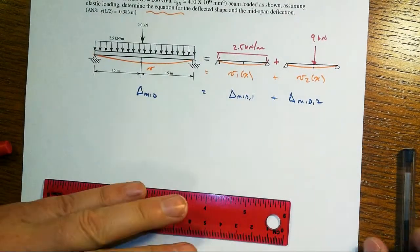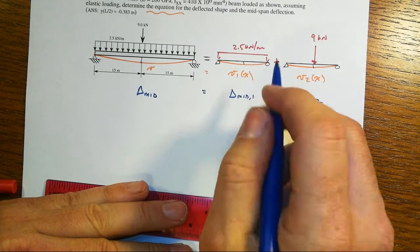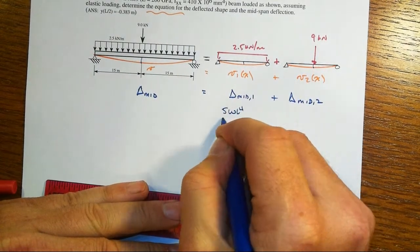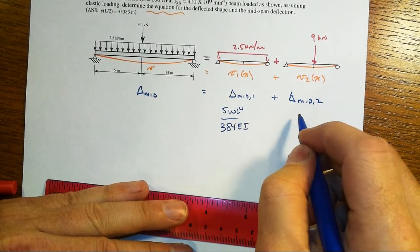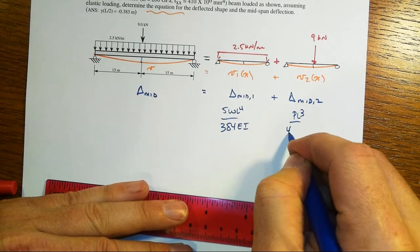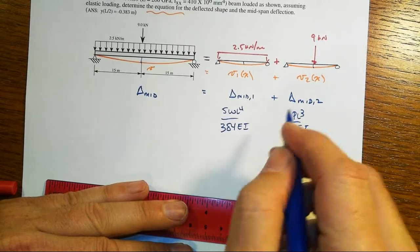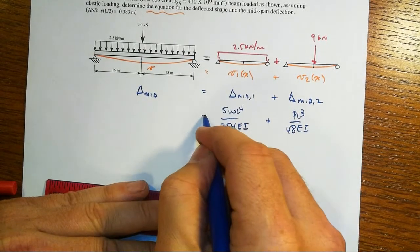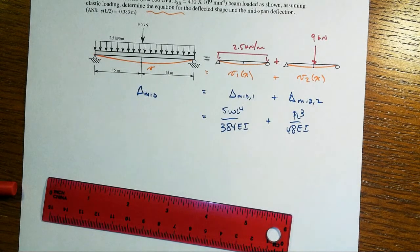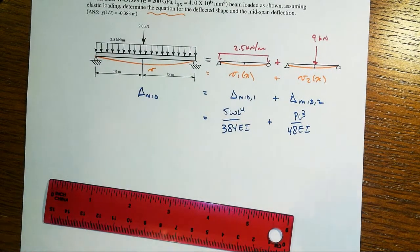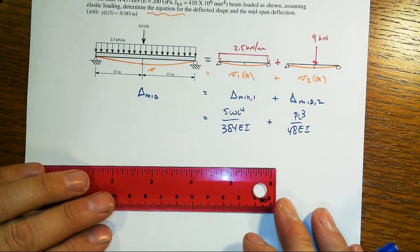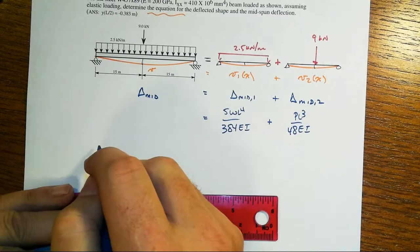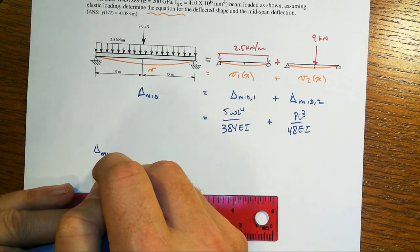Now, going back to that table, we would find out that delta mid for the distributed load would be 5WL to the fourth over 384EI. And delta mid for the second one would be PL cubed over 48EI. How do I know those? Well, I've used them so much that those are ingrained in my heart. My crusty little professor's heart, I know those. I don't memorize them. I know them because I've just used them so often. Let's put some numbers in here.